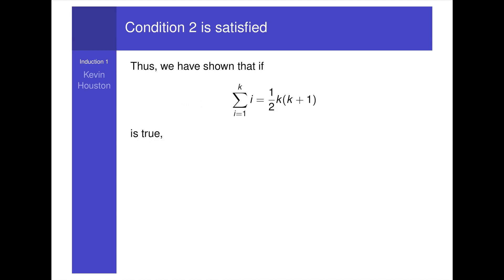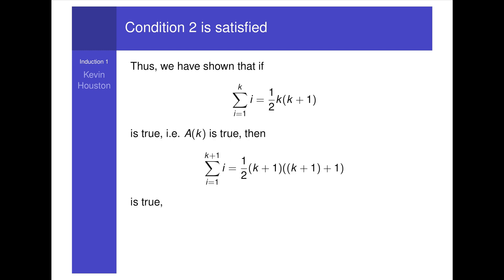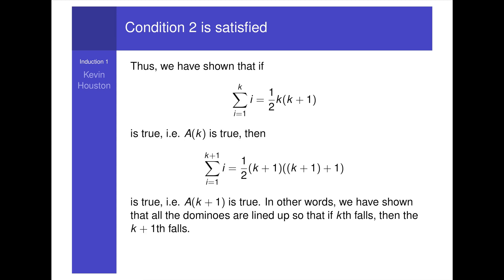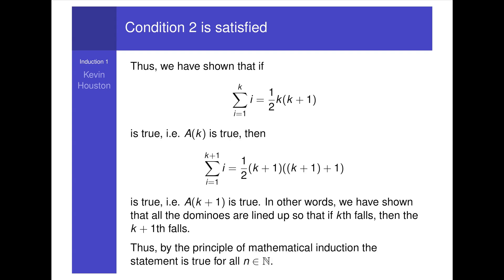Thus we have shown that if the summation of i from 1 to k equals one-half of k times k plus 1 (i.e., a_k is true), then the summation of i from 1 to k+1 equals one-half of (k+1) times (k+2) (i.e., a_{k+1} is true). In other words, all the dominoes are lined up so that if domino k falls, domino k+1 falls. By the principle of mathematical induction, the statement is true for all n in the natural numbers.